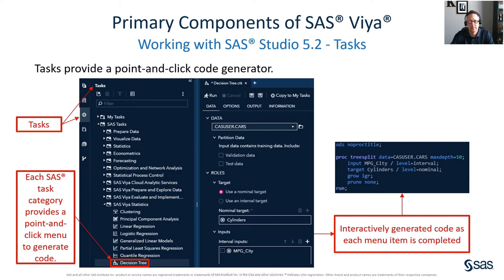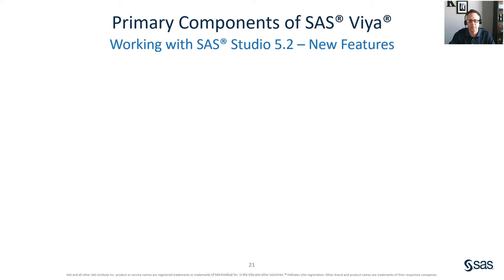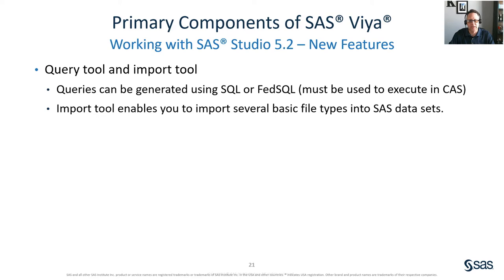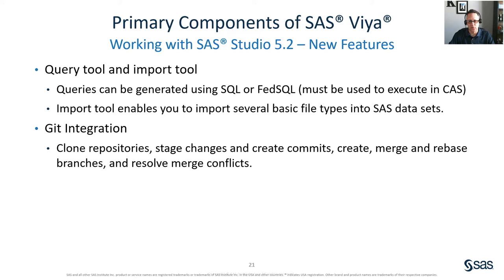Here are some of the new features in SAS Studio 5.2. Using the query tool, you can create a query to extract data from one or more tables according to criteria that you specify. You can generate your query using either SQL or FedSQL code; however, remember that only FedSQL is supported in CAS. Using the import tool, you can import several basic file types into datasets. With Git integration, you can clone repositories, stage changes and create commits, create, merge, and rebase branches, and resolve merge conflicts from within SAS Studio.